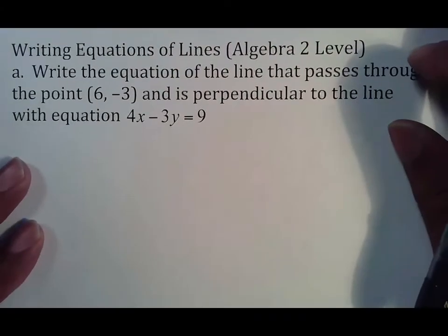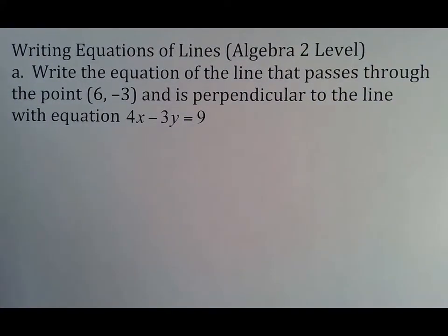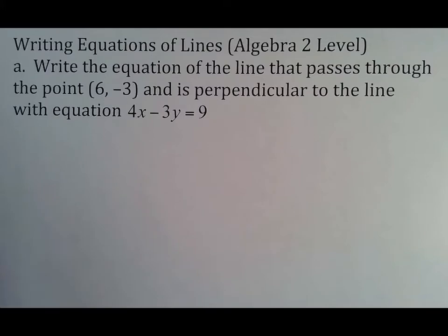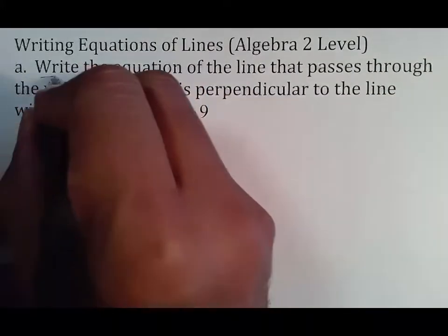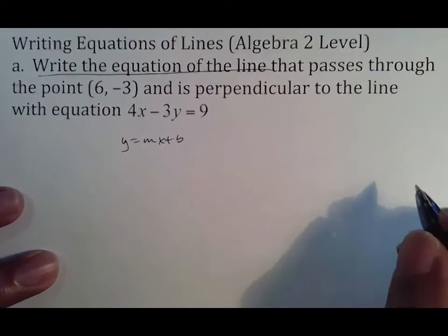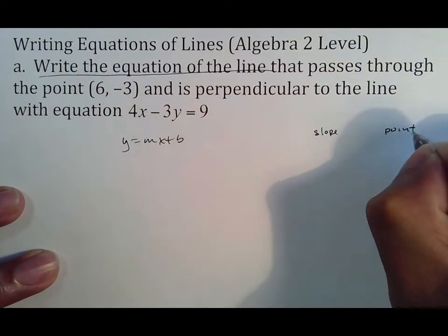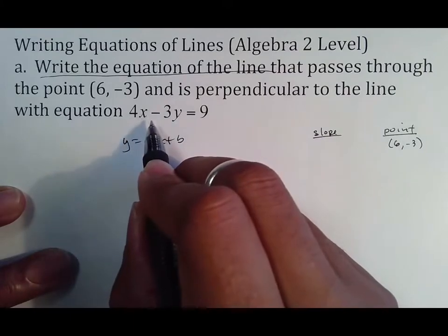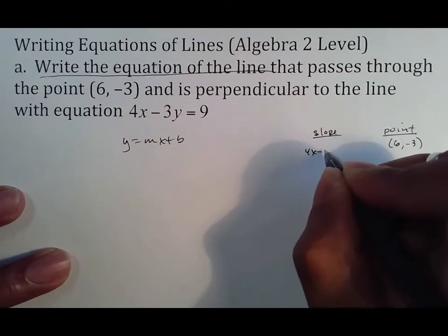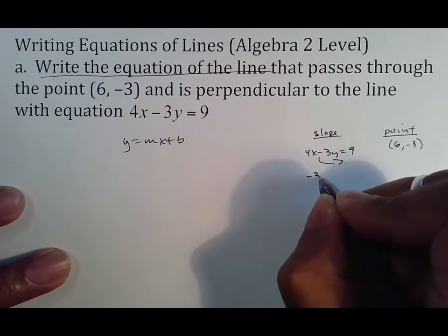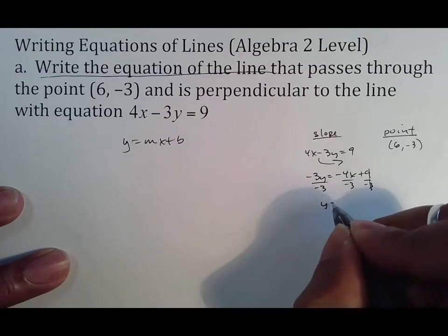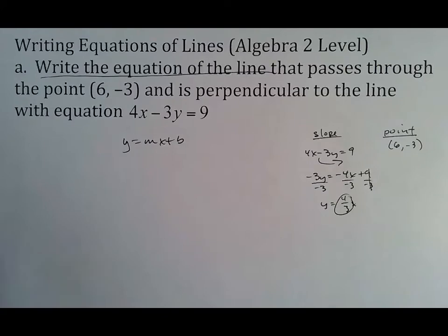Now, Algebra 2 level: write the equation of a line passing through (6, −3) that is perpendicular to 4x − 3y = 9. Anytime you see 'write the equation of a line,' write y = mx + b and hunt for two things: do I have a slope, and do I have a point? I have the point (6, −3). For slope, rearrange 4x − 3y = 9: subtract 4x to get −3y = −4x + 9, divide by −3, and the slope is 4/3.